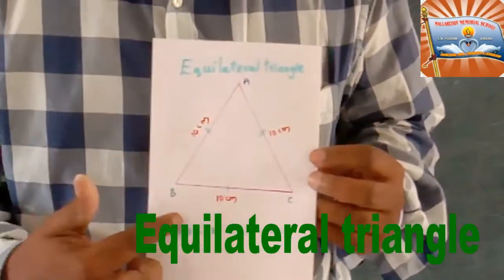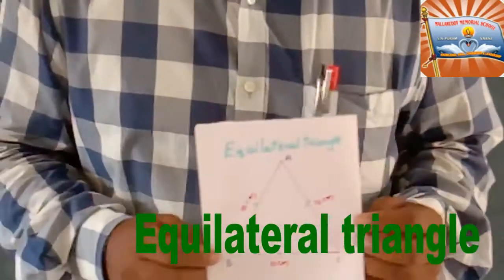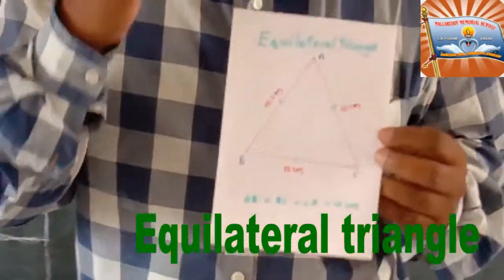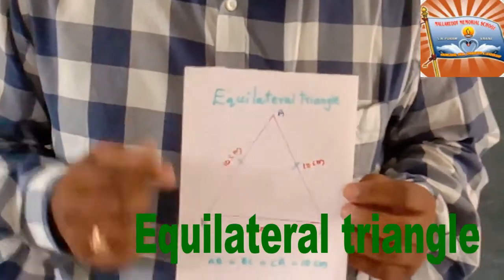All sides are equal in this triangle, so it is called an equilateral triangle. Now we have learned three types of triangle which are based on sides.